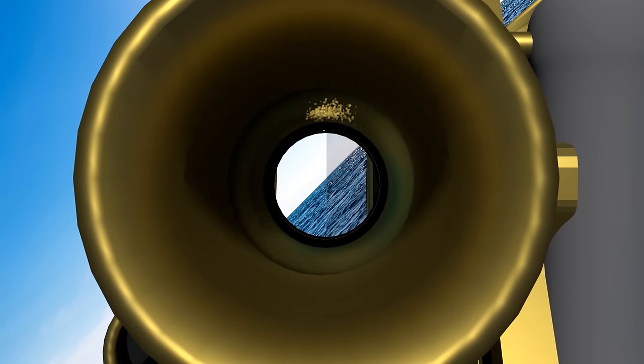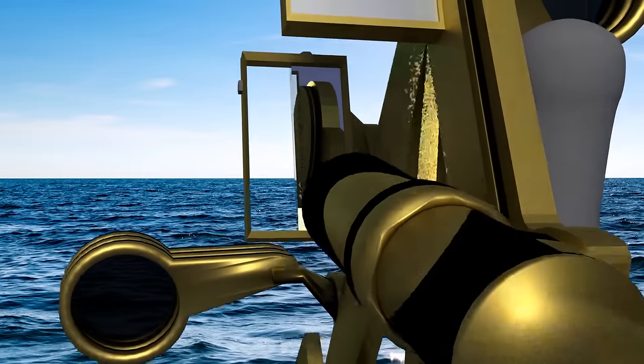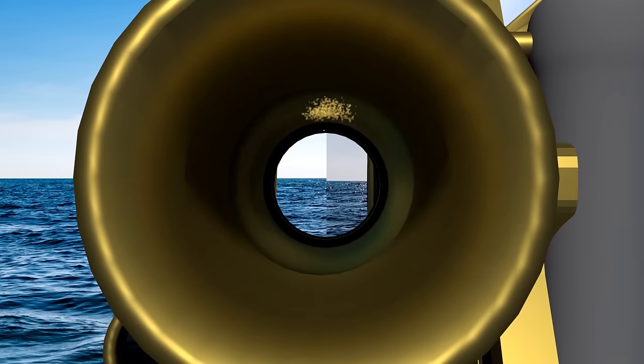As you bring the sextant back to its normal angle, the horizons may separate again. If they do, this is now due to the index error. Again, you adjust the screw that is on the top. This time, it is the one that is nearest the frame. Turn one way or the other until the horizon is again continuous.